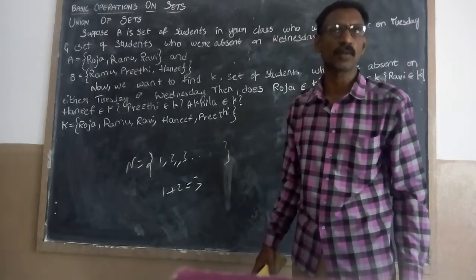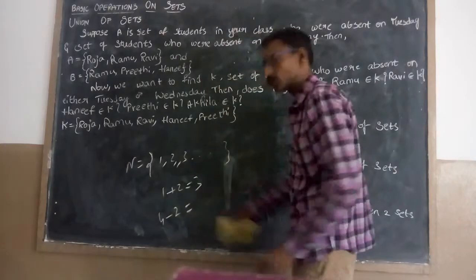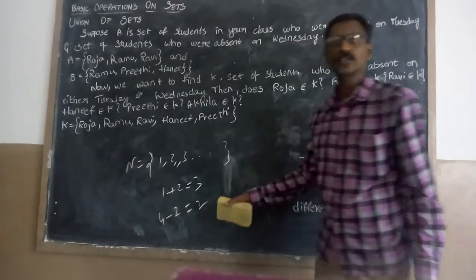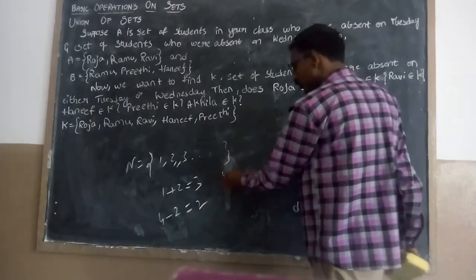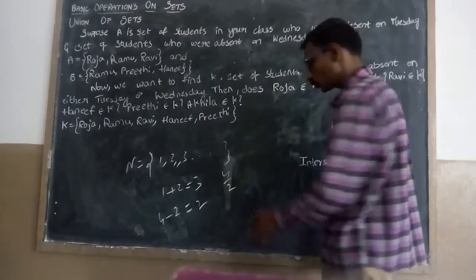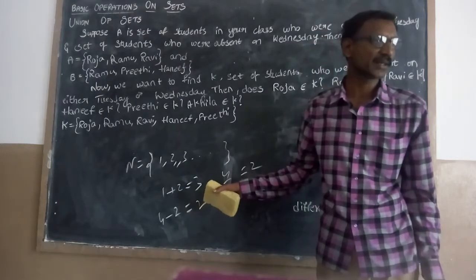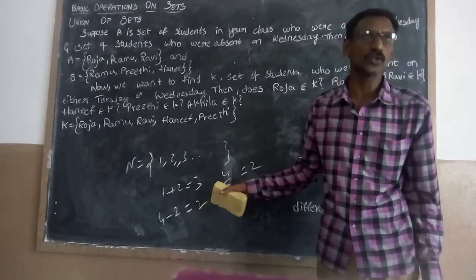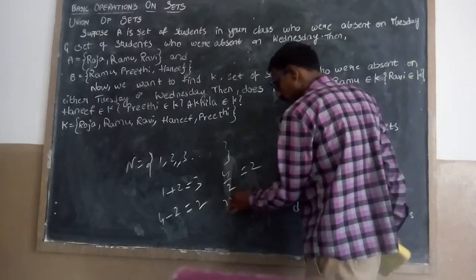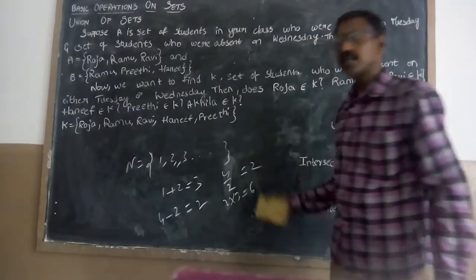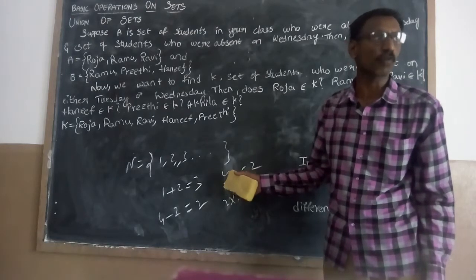We have some other properties. We can take 4 minus 2 is 2 — this is also one more operation. 4 divided by 2 is 2 — this is also one more operation. So we are going to be discussing plus, minus, and multiplication. 2 times 3 is equal to 6. These are the basic operations in natural number sets and whole number sets.